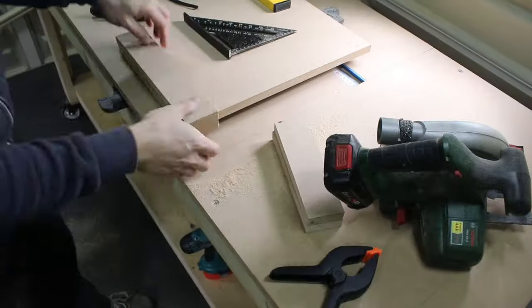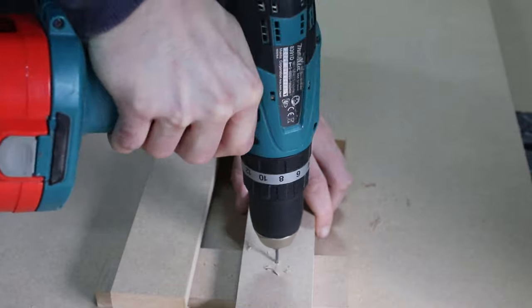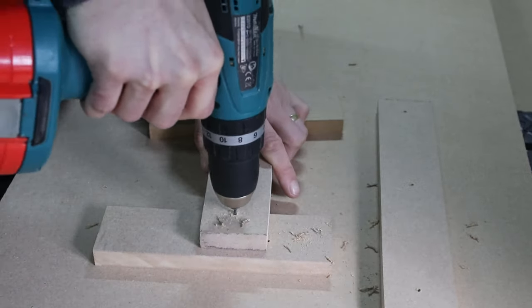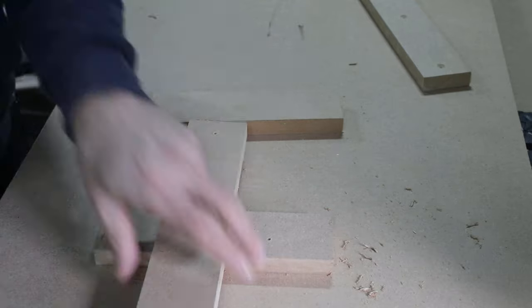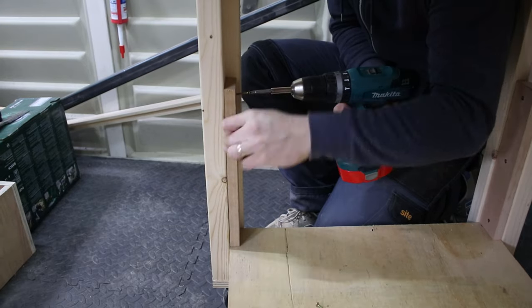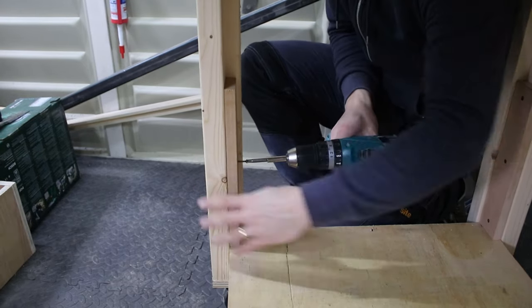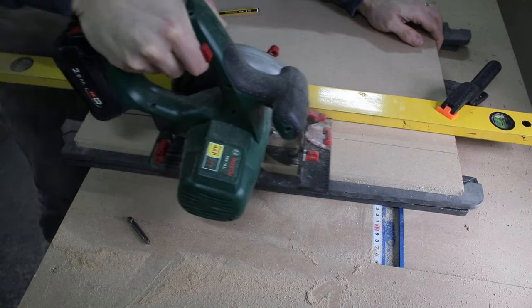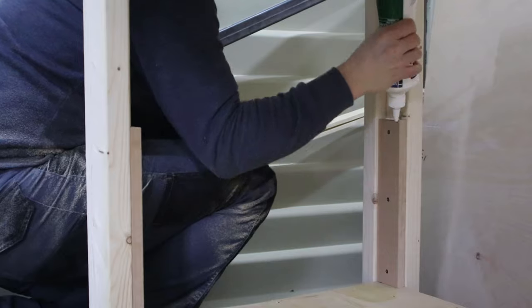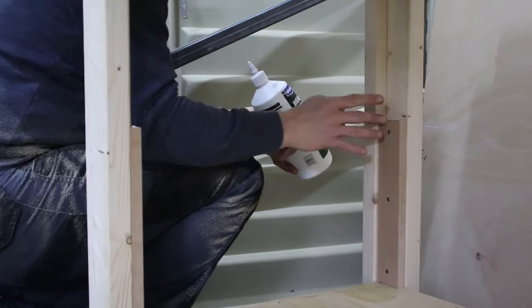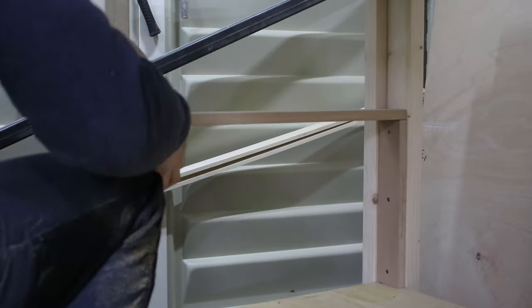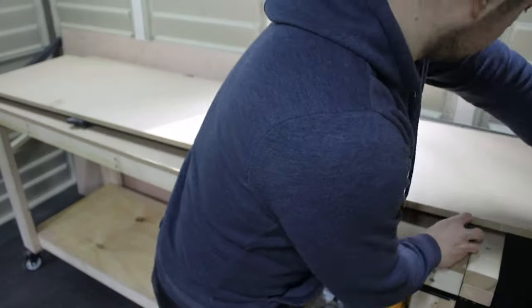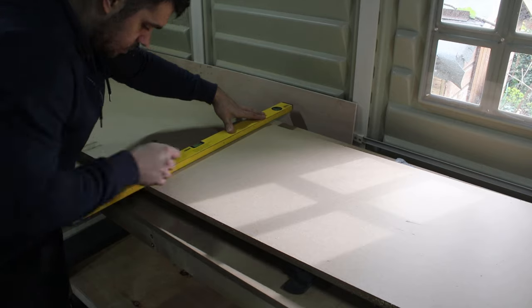First, I cut two legs and screwed them to the bench on top of the lower shelf. Then I connected them with another one. This will work as a support for the shelf. I had some leftover MDF in the workshop. It's slightly shorter than my lower shelf, but I'm okay with that.